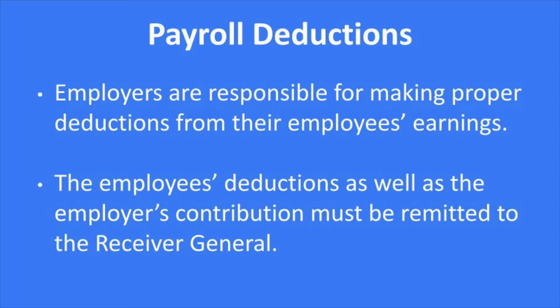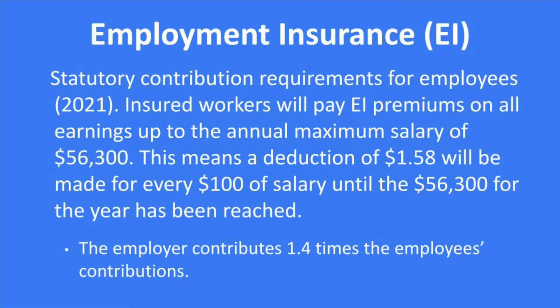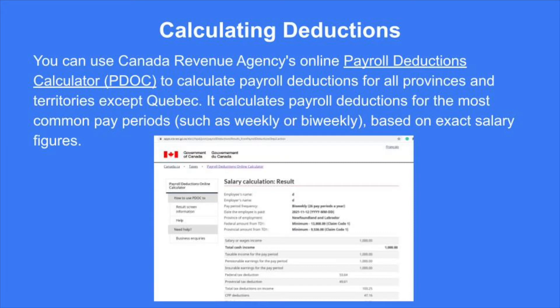Employers are absolutely responsible for making proper deductions from their employees' earnings. The employees' deductions, as well as the employer's contribution, must be remitted to the receiver general at a specified period of time. In terms of taxation, tax is deducted based on wages earned and personal tax credit, and there's no matching employer contribution to income tax. The basic answer to how much employers must deduct is found on the CRA's website, where you can type in the amount you're going to pay and it will indicate how much you need to deduct for income tax, Canada Pension Plan, and EI.